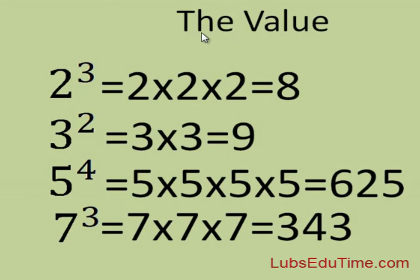The value of numbers with a power: 2 to the third is 2 times 2 times 2, and not 2 times 3. Now 2 times 2 is 4, and 4 times 2 gives you the answer 8.